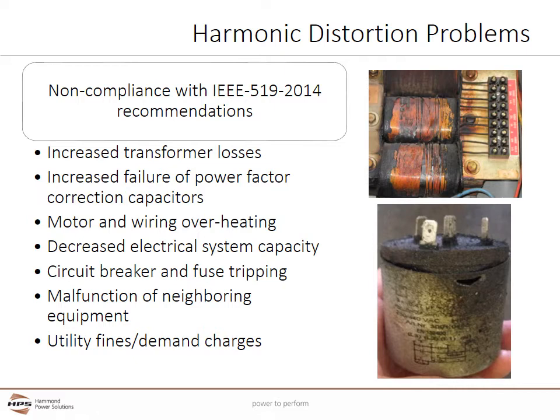The rectification of AC to DC power causes harmonics. Harmonics can cause a number of issues including increased transformer losses, increased failure of electrical power factor correction capacitors — which attract harmonic currents that can damage and destroy them — motors running less efficiently, and wiring and cabling overheating from the additional harmonic currents. This leads to decreased electrical system capacity. Harmonic currents can also cause circuit breaker and fuse tripping, and malfunctioning of neighboring equipment such as communication errors or increased DC power supply failures.